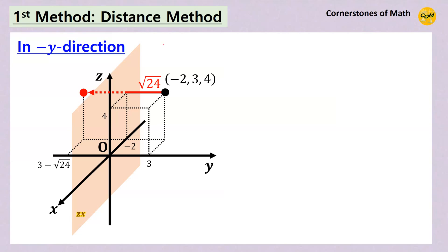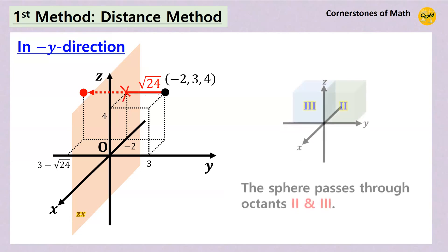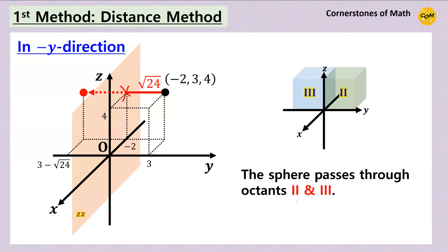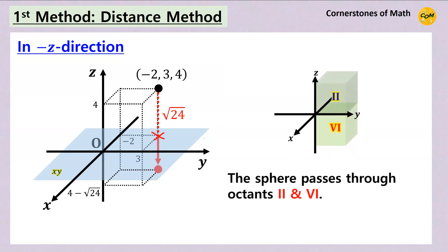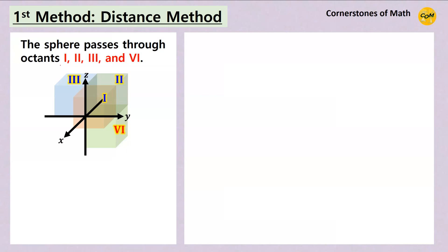In the x direction, the red arrow definitely passes through the yz-plane, meaning that the sphere exists on the other side of the yz-plane as well. In terms of octants, the sphere passes through octants 1 and 2. In the negative y direction, moving a distance of square root of 24 results in passing through the zx-plane, so the sphere passes through octants 2 and 3. In the negative z direction, moving a distance of square root of 24 results in passing through the xy-plane, so the sphere passes through octants 2 and 6. So far we have found octants 1, 2, 3, and 6.